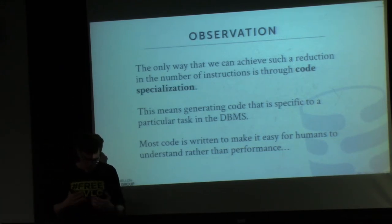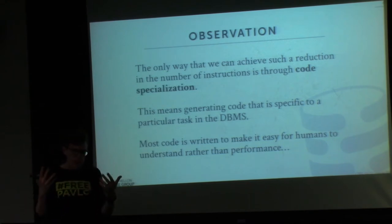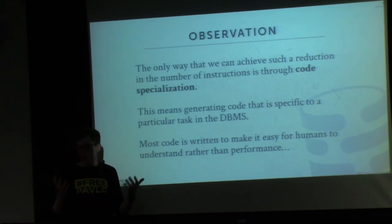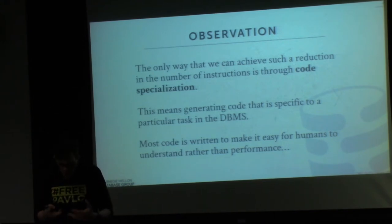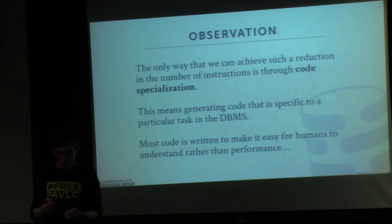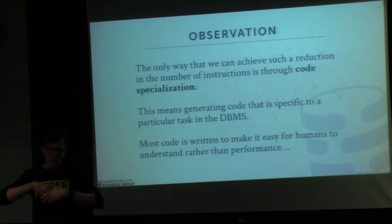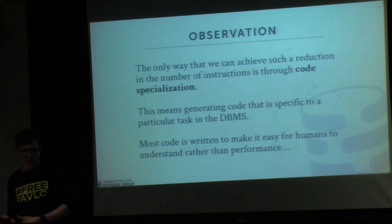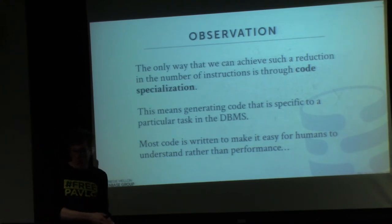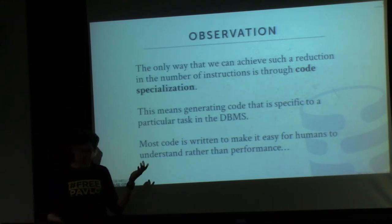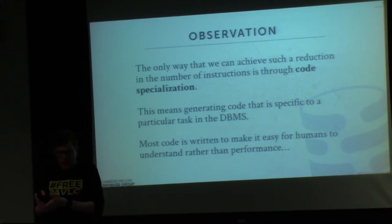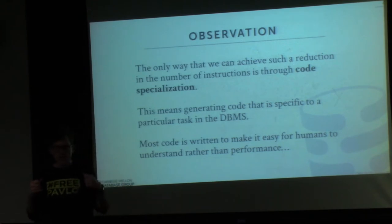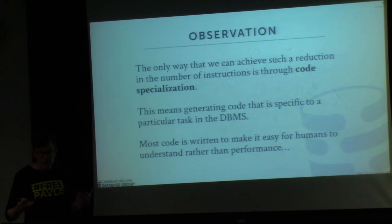The idea of code specialization is that rather than having a general-purpose execution engine that can run on any possible query plan the optimizer gives it, we're going to instead create code that is only designed to execute the specific thing it's supposed to execute. Instead of seeing a query plan and asking 'what's my predicate?', 'what attributes does my tuple touch?', 'what type do they have?' — instead of having giant switch statements decide the type, we just bake into machine code exactly: we know it's this type, it's this predicate on this data. There are no if-clauses, no virtual function table lookups. You just execute the bare minimum needed to compute what you want.